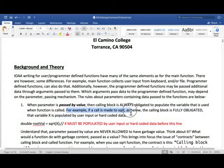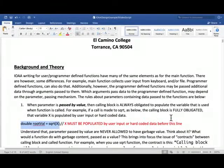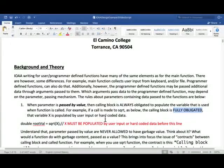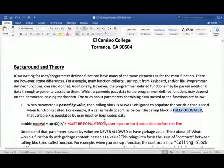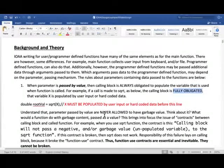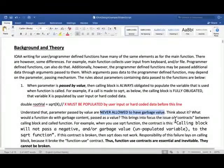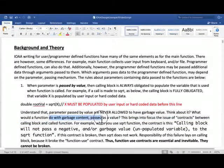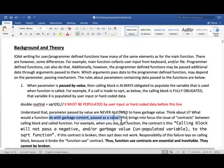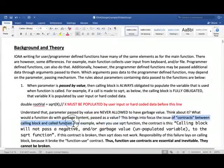When a parameter is passed by value, the important thing is that the calling block is always obligated to populate the variable that is used when function is called. If a call is made to sqrt like this, then the calling block is fully obligated - this is very important - the variable x is populated by user input or hard-coded data. Parameters passed by value are never allowed to have a garbage value. What would a function do with garbage content passed as a value? Obviously nothing.